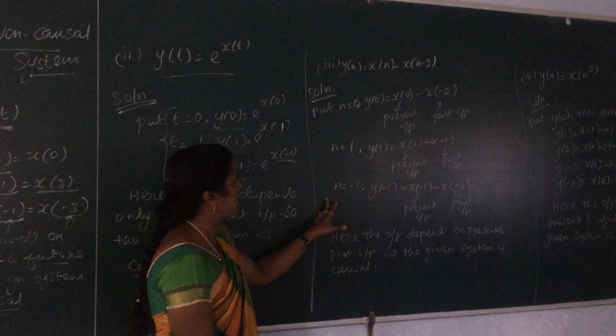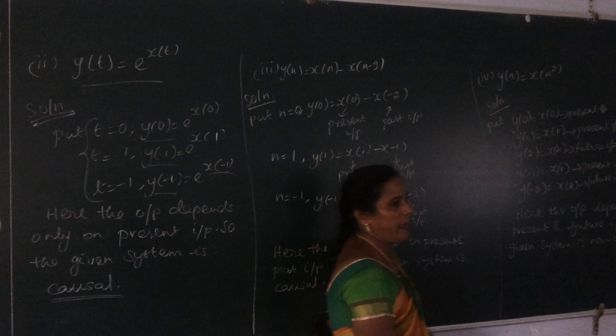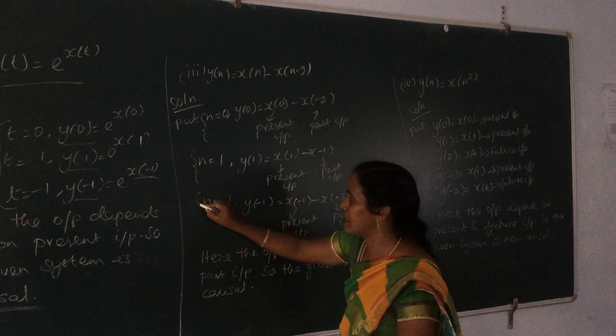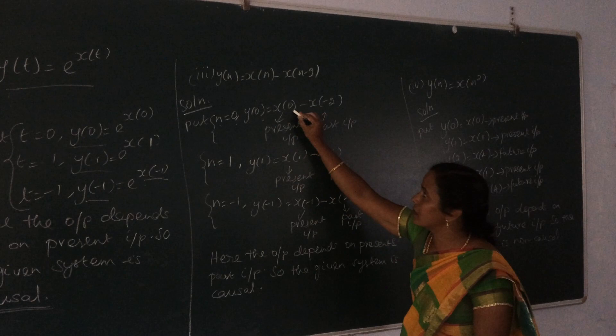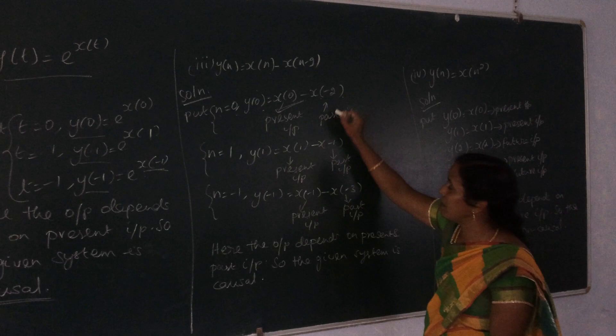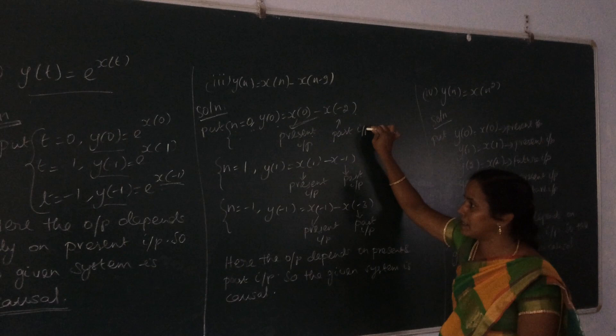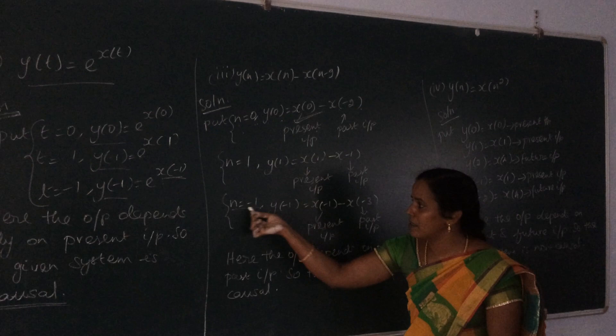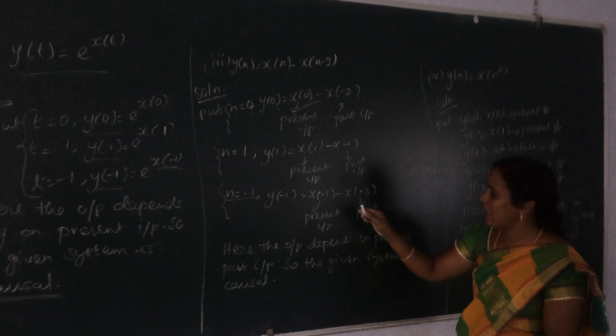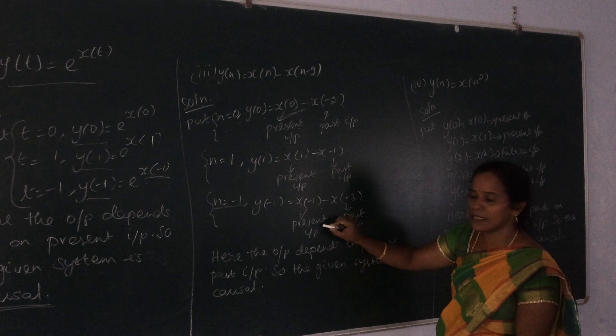The third problem: y(n) = x(n) - x(n-2). Again we find the output at 3 time instances. When n = 0, y(0) = x(0) - x(-2). Here x(0) is the present input and x(-2) is the past input. When n = 1, y(1) = x(1) - x(-1) — again present and past input. When n = -1, y(-1) = x(-1) - x(-2) — again present and past input. For each instance, the output depends upon the present as well as the past input, so the given system is a causal system.